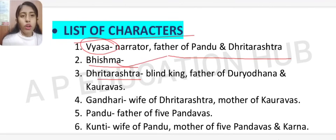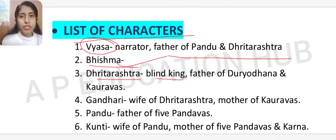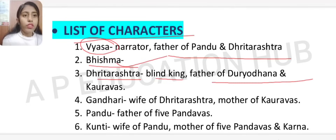Dhritarashtra is the blind king — I will tell you the reason for his blindness shortly. He is the father of Duryodhana and the Kauravas. Gandhari is the wife of Dhritarashtra and mother of the Kauravas. Then there is Pandu, who is the father of the five Pandavas.